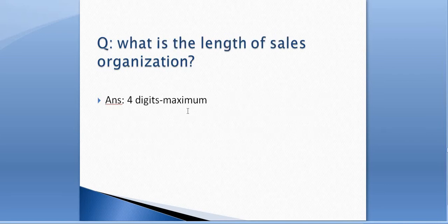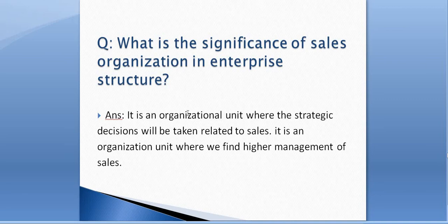What is the length of sales organization? It is a maximum of 4 digits. What is the significance of sales organization in enterprise structure? It is an organization unit where strategic decisions related to sales are taken — like how much discount should be given, how much sales should happen, and so on. It is the organization unit where we find the higher management of sales.